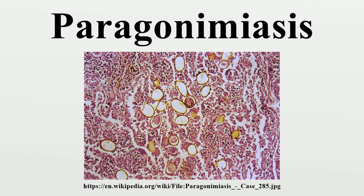Miracidia go through several developmental stages inside the snail — sporocysts and rediae — with the latter giving rise to many cercariae, which emerge from the snail. The cercariae invade the second intermediate host, a crustacean such as a crab or crayfish, where they encyst and become metacercariae. This is the infective stage for the mammalian host. Human infection with P. westermani occurs by eating inadequately cooked or pickled crab or crayfish harboring metacercariae. The metacercariae excyst in the duodenum, penetrate through the intestinal wall into the peritoneal cavity, then through the abdominal wall and diaphragm into the lungs, where they become encapsulated and develop into adults.